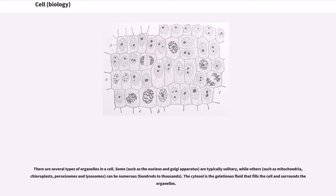There are several types of organelles in the cell. Some, such as the nucleus and Golgi apparatus, are typically solitary, while others, such as mitochondria, chloroplasts, peroxisomes and lysosomes, can be numerous, hundreds to thousands. The cytosol is the gelatinous fluid that fills the cell and surrounds the organelles.